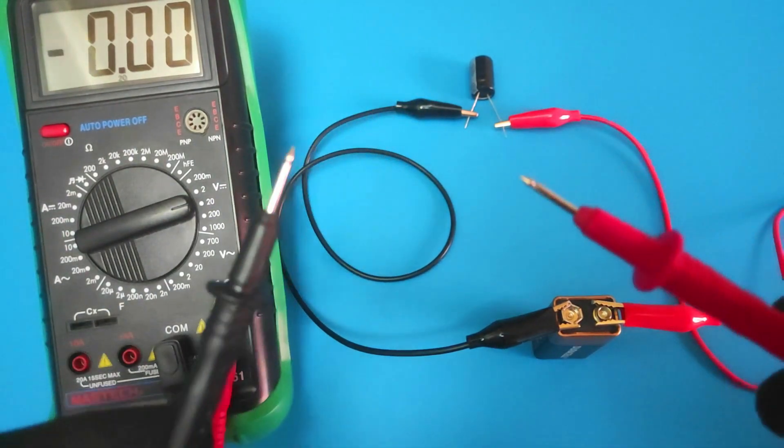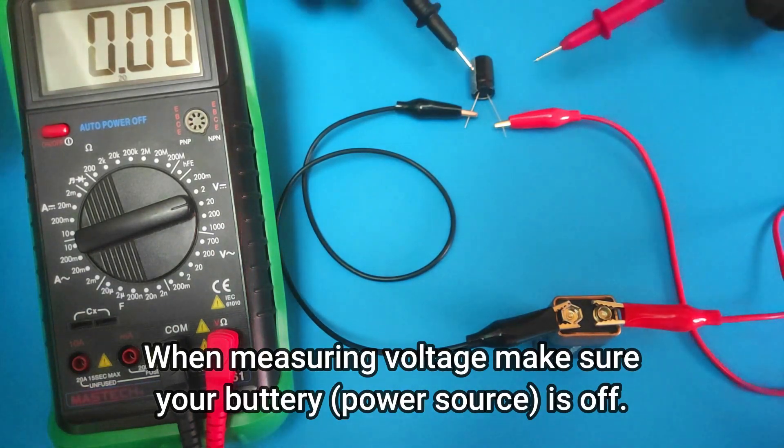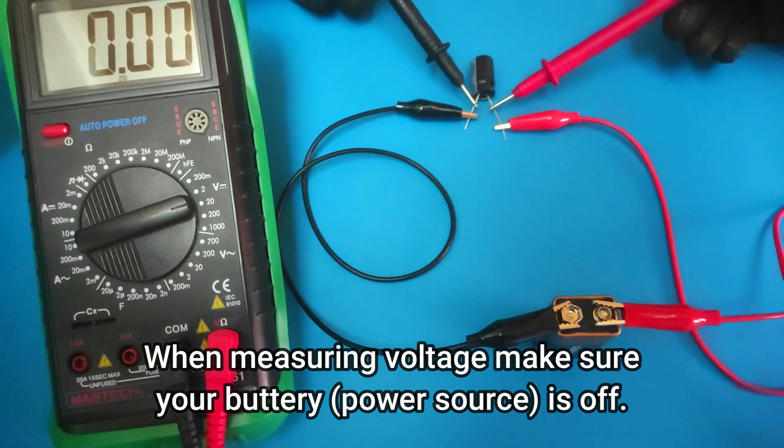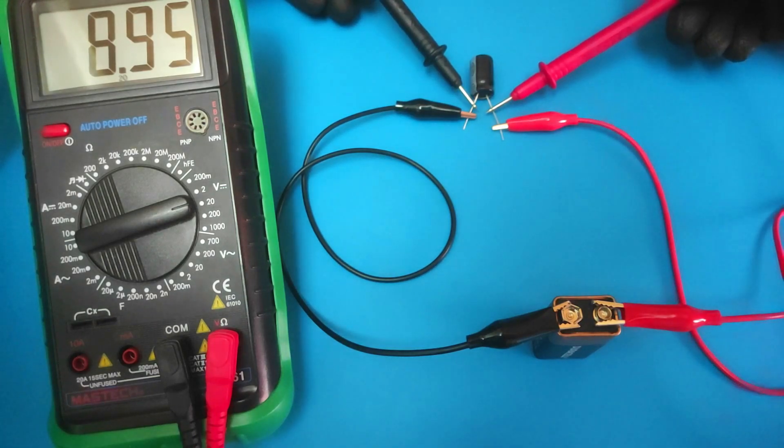Then place the red probe on the plus and the black probe on the minus. And we got 9 volts. That means this capacitor passed all three tests and is working properly.